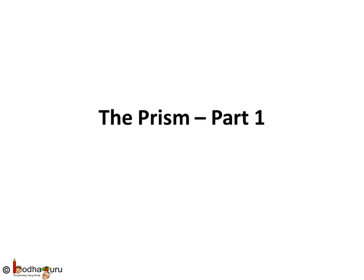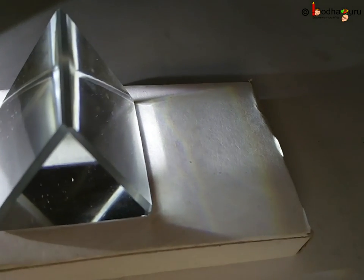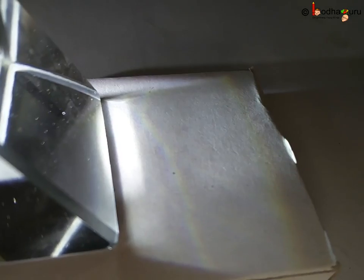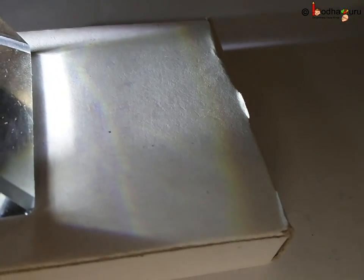Hello everyone. A prism is such a fascinating shape. When white light passes through it, it breaks down into 7 colors.